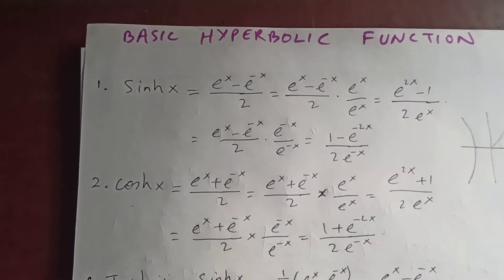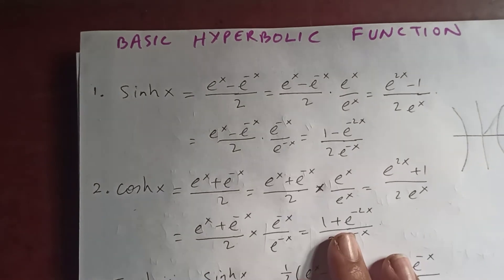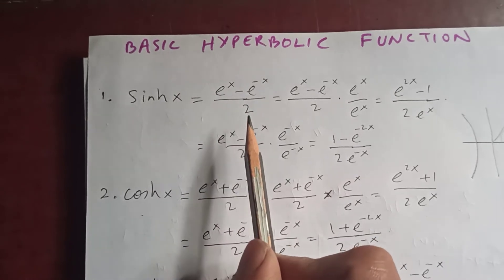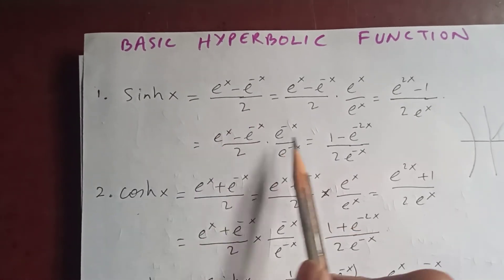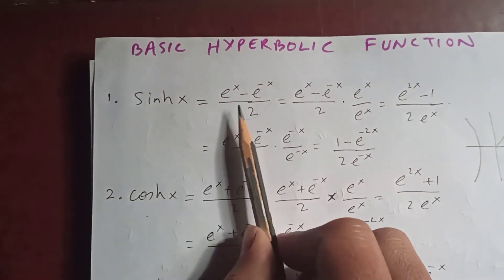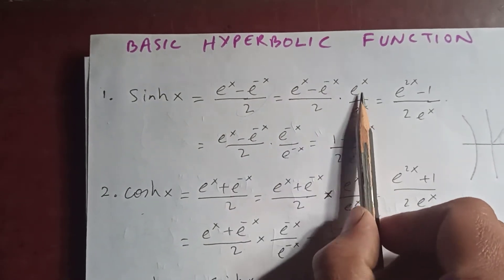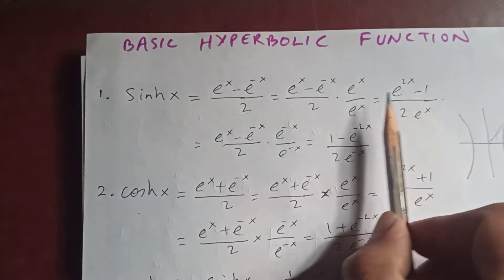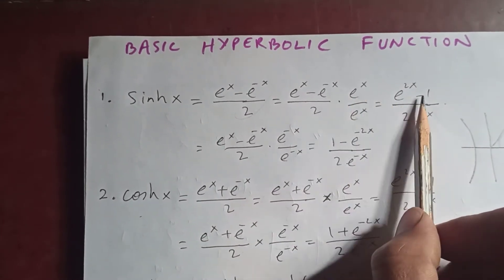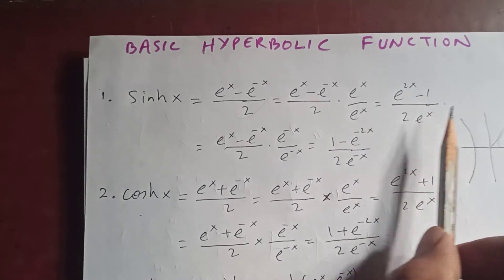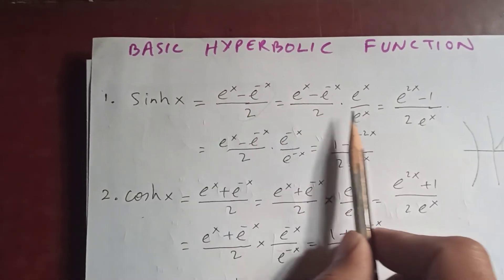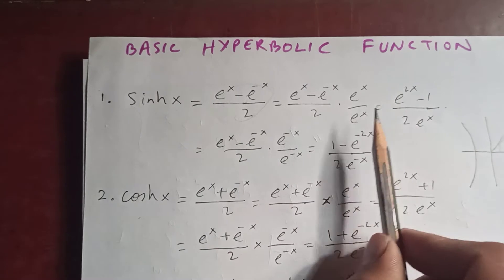Sine hyperbolic of x is e to the x minus e to the negative x, upon 2 — this is just a simplification. If you multiply both numerator and denominator by e to the x, you get e to the 2x minus 1, upon 2e to the x. So sinh(x) can be expressed in this form as well.